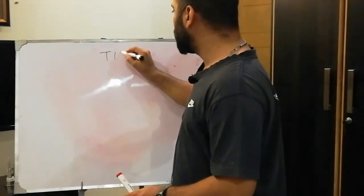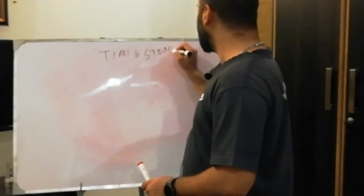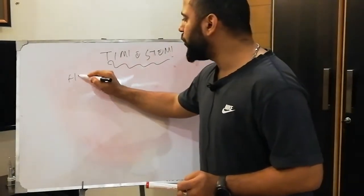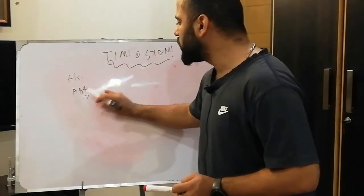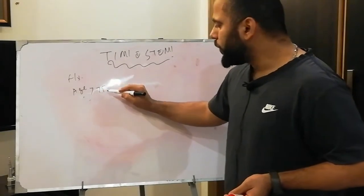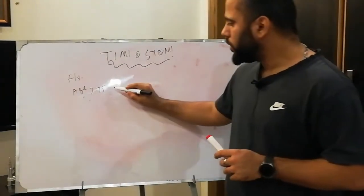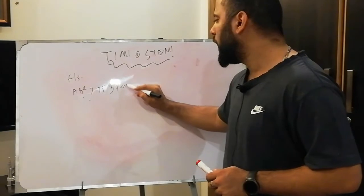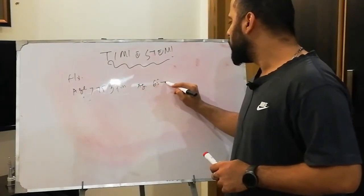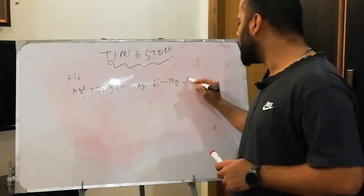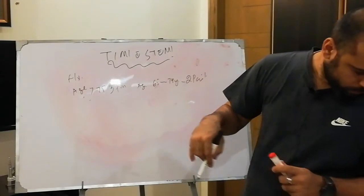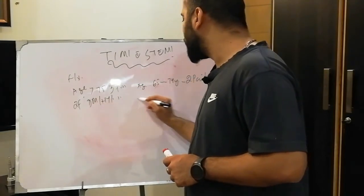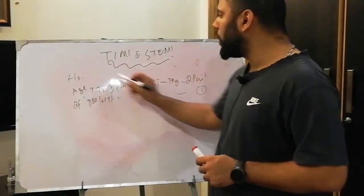What is the TIMI score with STEMI? First, we look at history. On history, we have age: if age is more than 75 years, then three points; if age is 65 to 74 years, then two points. And if the patient has a history of diabetes, hypertension, or any other risk factor, then one point. So on history, we have three criteria giving three, two, and one points respectively.